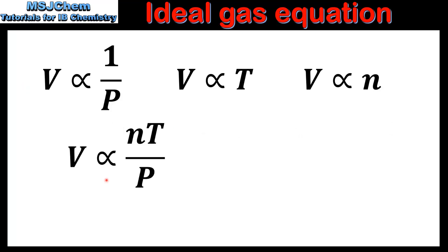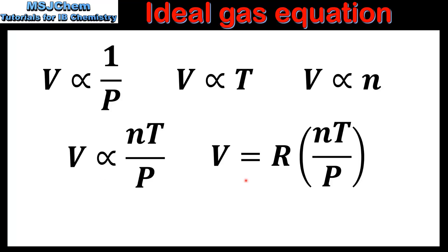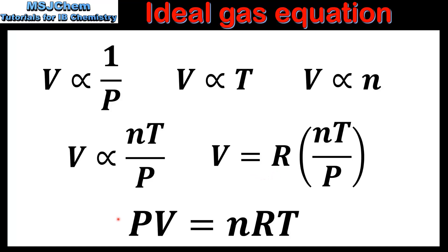These three laws can be combined to form a new expression. This new expression shows that the volume of a gas is directly proportional to the amount in moles and the temperature, and inversely proportional to the pressure. The proportionality constant in this equation is given the letter R, which is the universal gas constant. This equation can then be rearranged to give the most common form of the ideal gas equation, which is PV equals nRT.